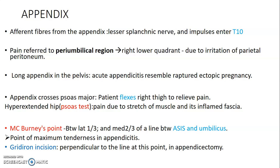In appendicitis, there is referred pain at the periumbilical region because the appendix receives innervation from the lesser splanchnic nerve entering at T10. Thereafter the pain is referred to the right lower quadrant due to irritation of the parietal peritoneum. If the appendix is long and goes to the pelvis, the pain may resemble that of a ruptured ectopic pregnancy. The appendix lies on the psoas fascia, so patients with appendicitis tend to flex during hyperextension — this is the psoas test. These patients prefer to stay with a flexed hip since psoas major causes flexion at the hip joint.